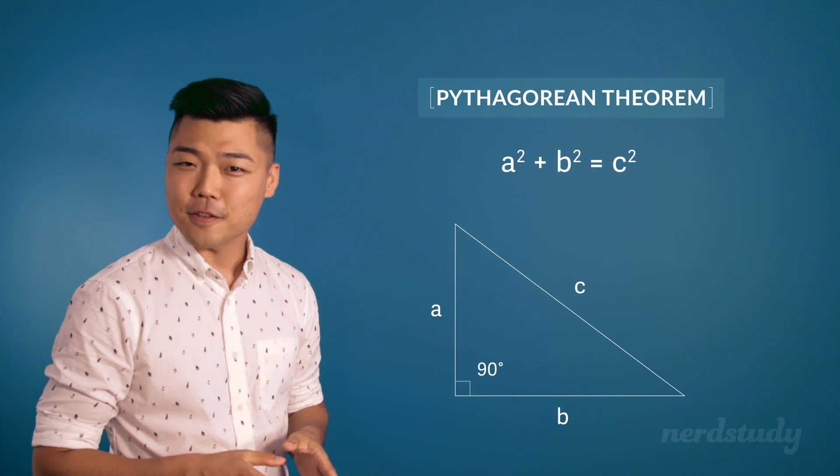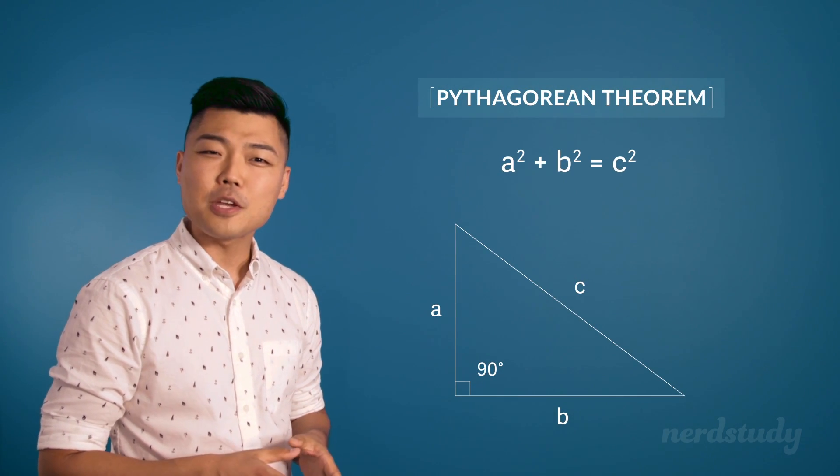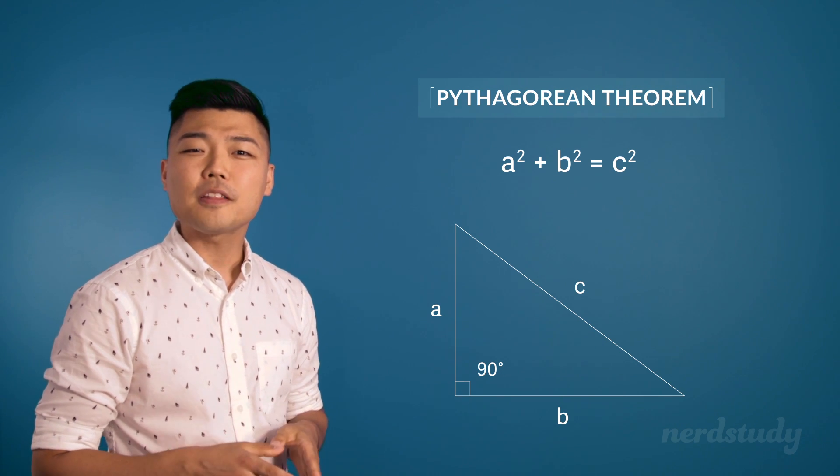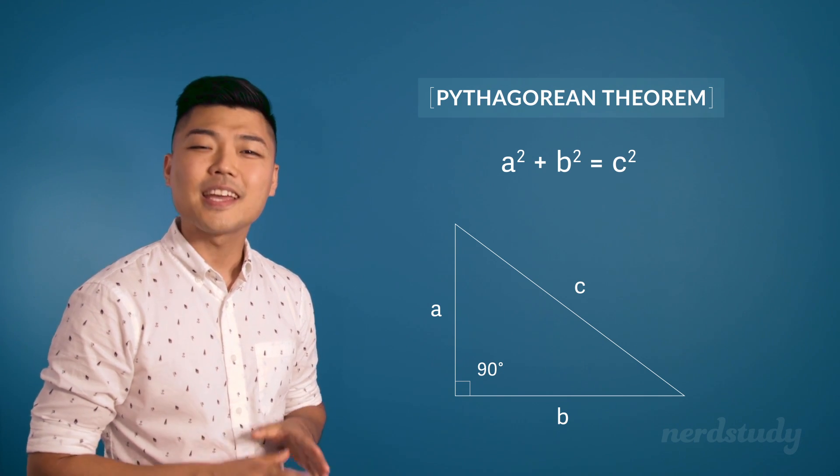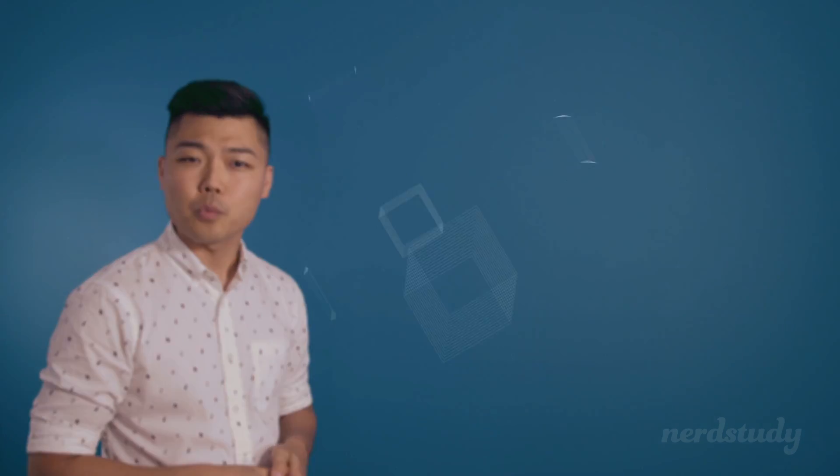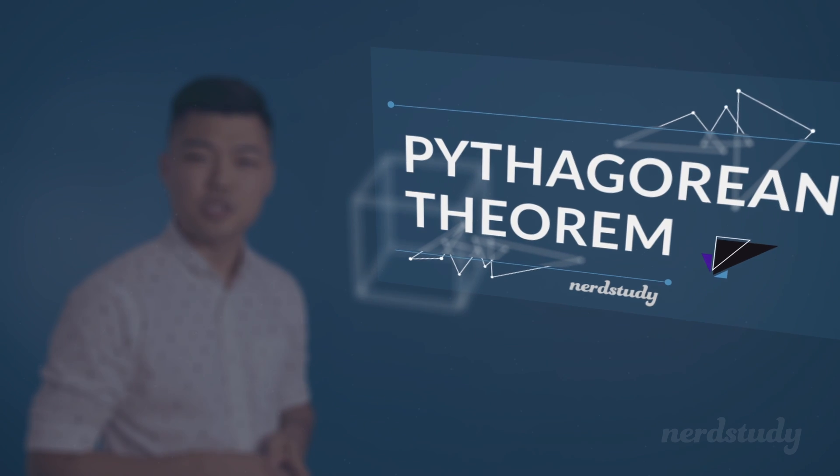The beauty behind this theorem is that if you have the information to two of the sides of a right-angled triangle, then you can find the length of the other side guaranteed. So let's actually apply this new theorem that we just learned to solve some questions together.